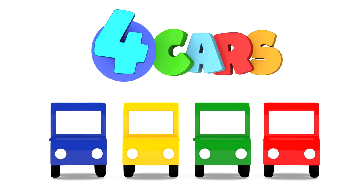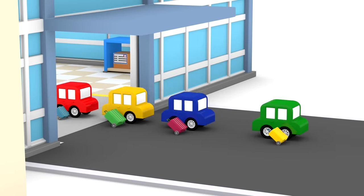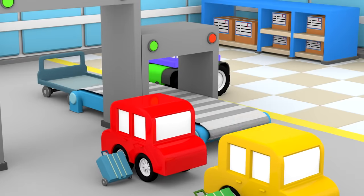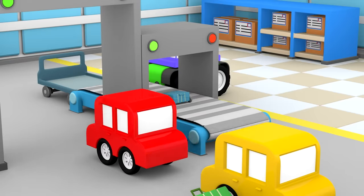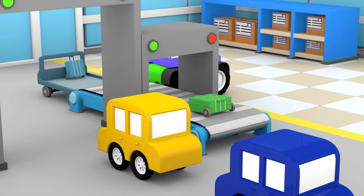Four Cars. The four cars have arrived at the airport. What are they doing? They're dropping off their baggage. They don't let passengers on the plane with big suitcases.